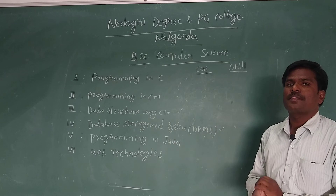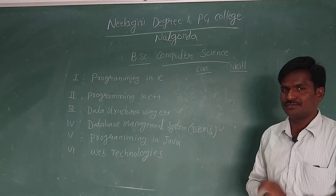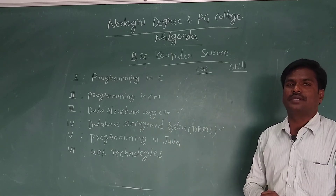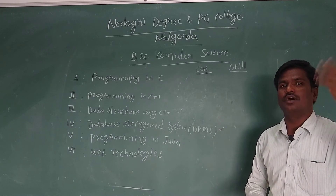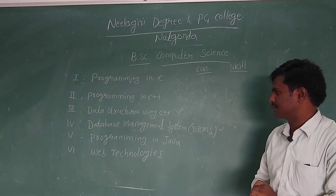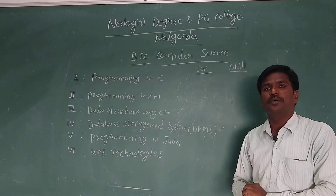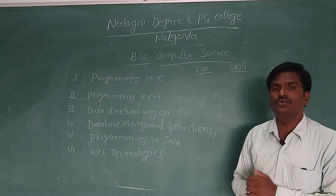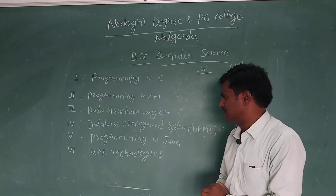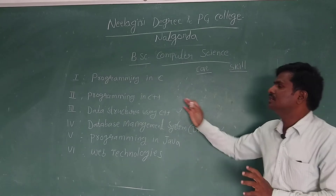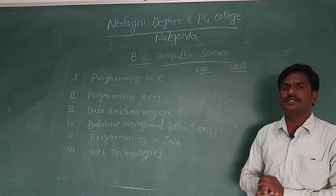In fifth semester, we have to study a general elective, which can be chosen from other subjects such as Chemistry, Geology, or other BA subjects. In sixth semester, we can do a project, or we can study another subject. So these are the different subjects that we study in Computer Science as part of the graduation course.